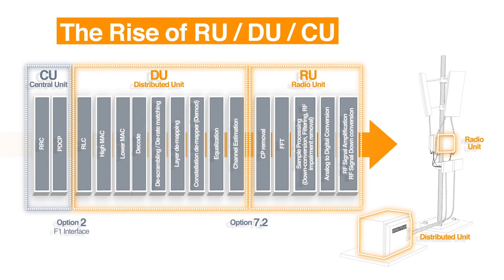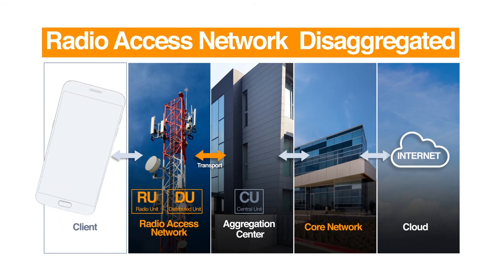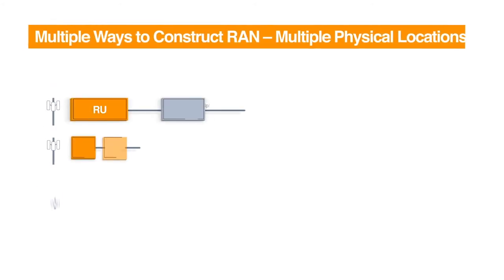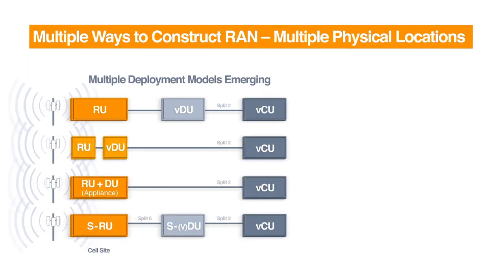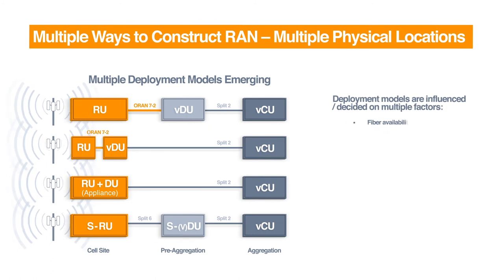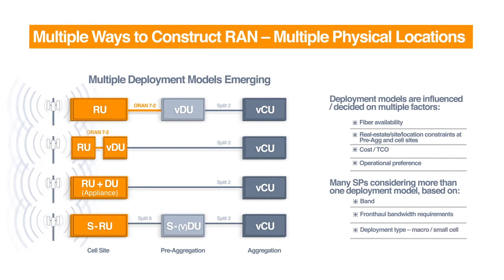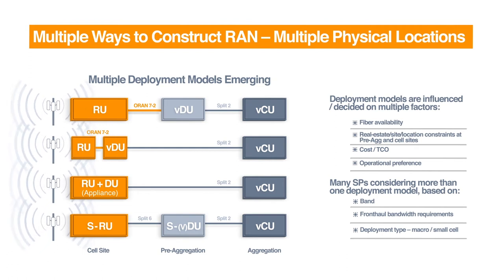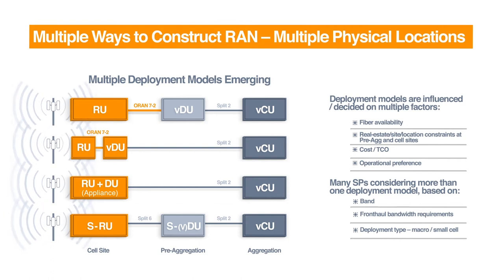Now that you have understood the concept of RU, DU, and CU, let us take a look at the entire network again. There are various topologies available for the placement of RU, DU, and CU. RU and DU can both be at the cell side, or there can be a virtualized DU at the pre-aggregation node connected to multiple RUs. The decision to pick one of these options is based on fiber availability, real estate, TCO, operational preference, fronthaul rates, user density, workloads, and more. The key is that mobile operators need the flexibility to pick and choose different splits based on the same off-the-shelf hardware network components by using different software implementations.